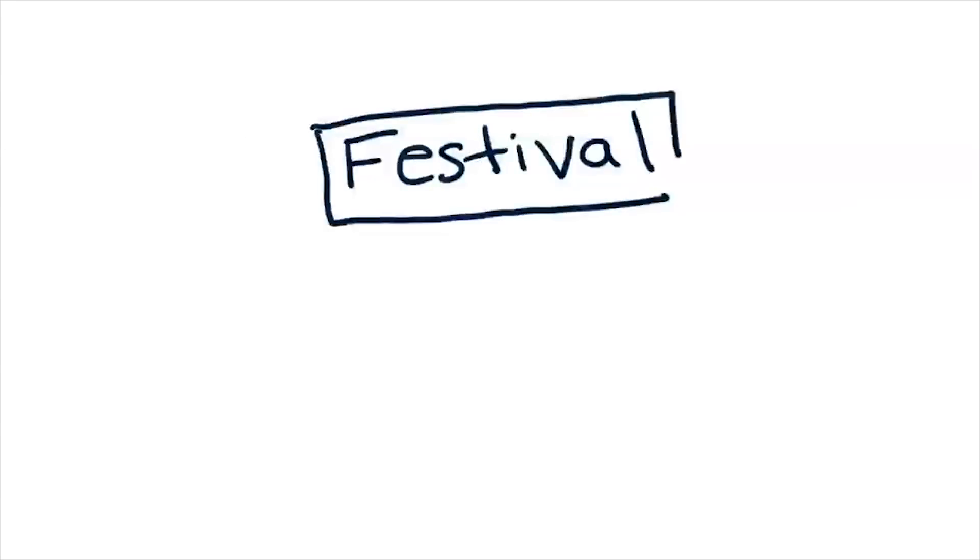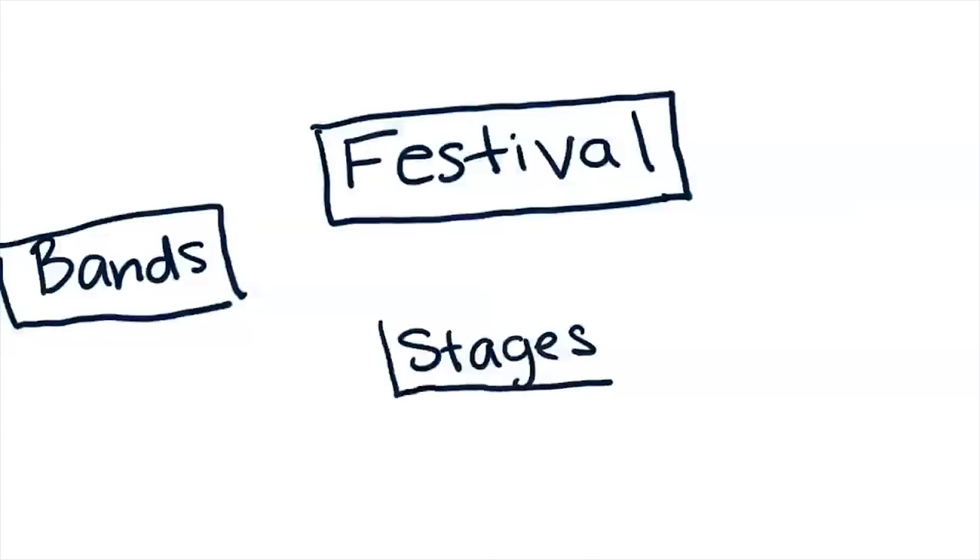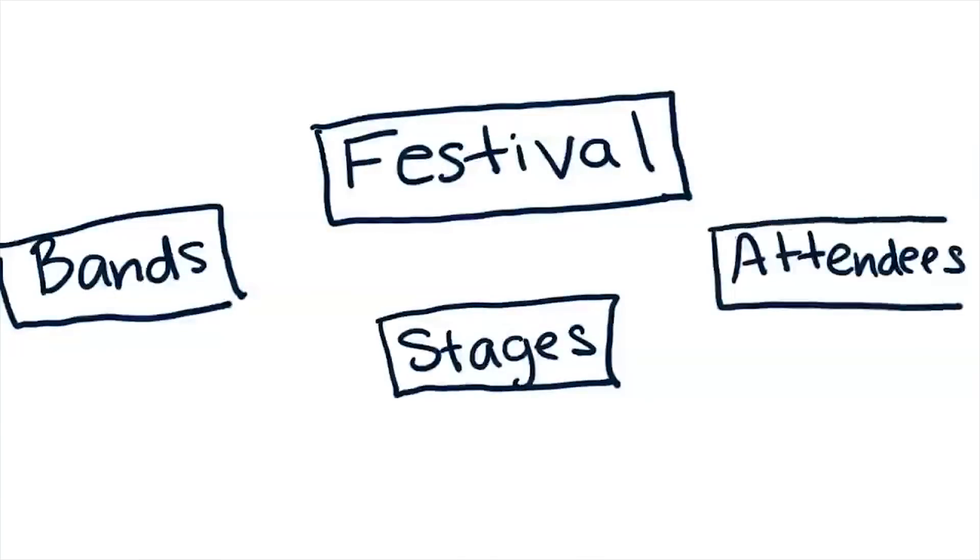Let's write it down on this tablet and map out what our schema is going to be. First, we start off with our festival. One of the other things we wanted to track were bands. Also, we wanted to track stages, and we wanted to track attendees. So the boxes will become more apparent when we go into the app to start building. It'll become more interesting when we start connecting the boxes and talking about how festivals relate to bands or how attendees relate to festivals.